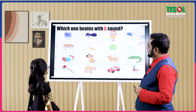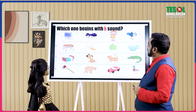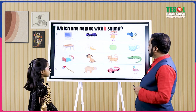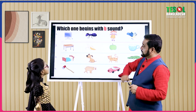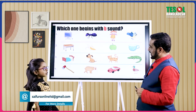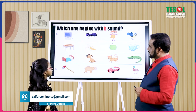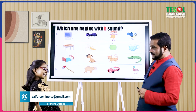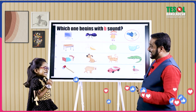Now let's move on. There's another exercise — the same pictures again, but the sound is B. Which one begins with B sound in the first row? Bird or shark? Bird. Let's check. She's right.